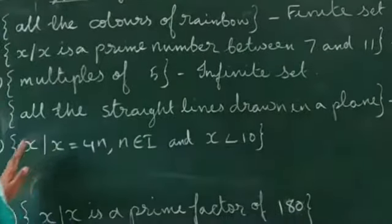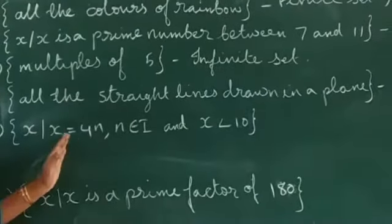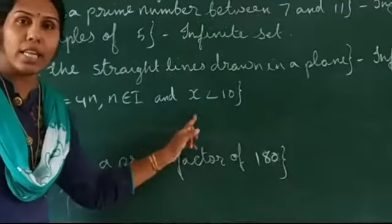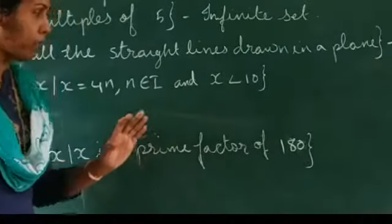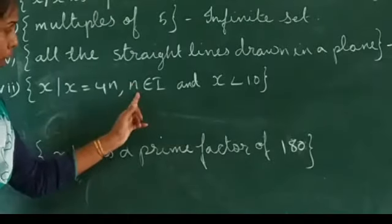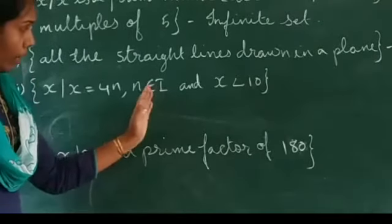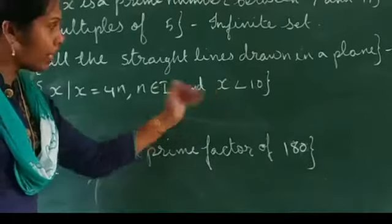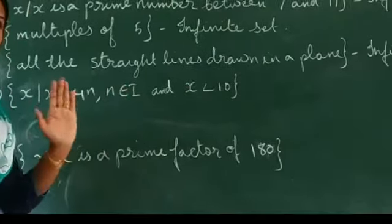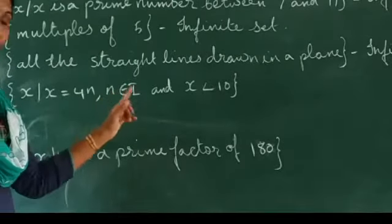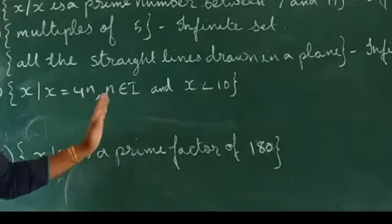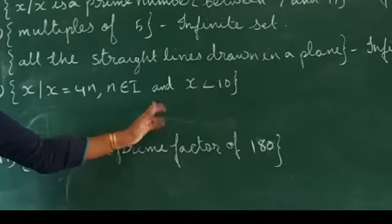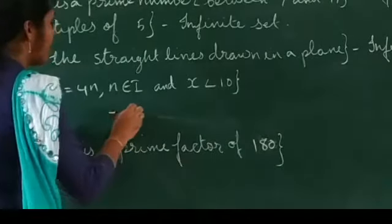Next: set of all x such that x equals 4n, where n belongs to integers I and x is less than 10. Here, n belongs to I and x is less than 10. Only a positive limit is given; on the negative side, there is no limit given. That means it extends to infinity towards the negative side. Therefore, this is also an infinite set.